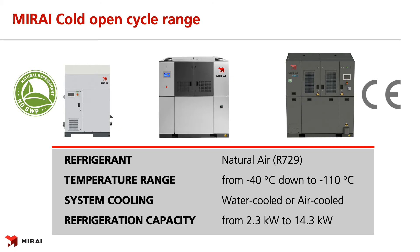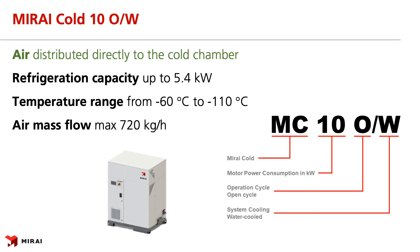In the open cycle configuration, we offer cooling capacity from 2.3 kW to 14.3 kW. Machines are either water or air cooled. The smallest open air cycle machine is Mirai Cold 10. In the nomenclature, MC stands for Mirai Cold, the number behind is the motor power consumption in kW, O stands for open cycle, and the last letter stands for the means of system cooling — which is water in this case. Cooling capacity of Mirai Cold 10 is up to 5.4 kW.